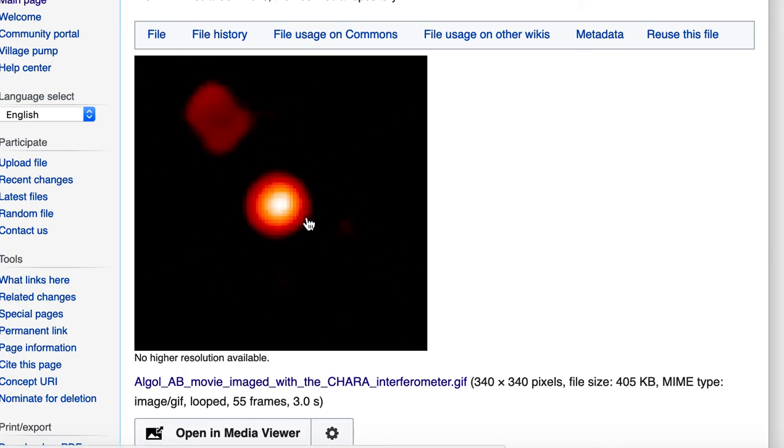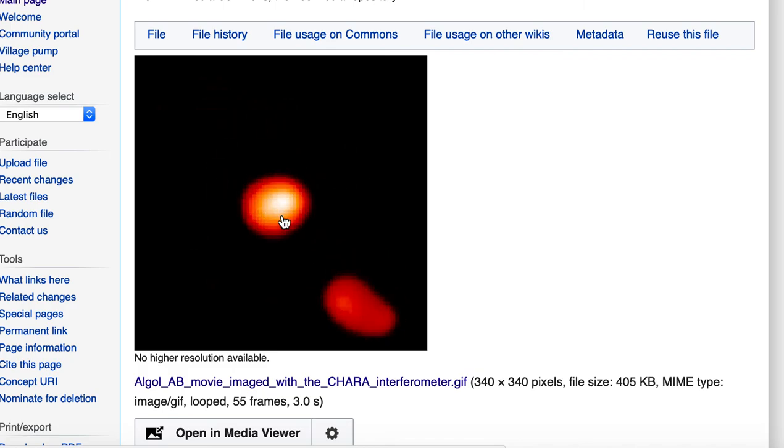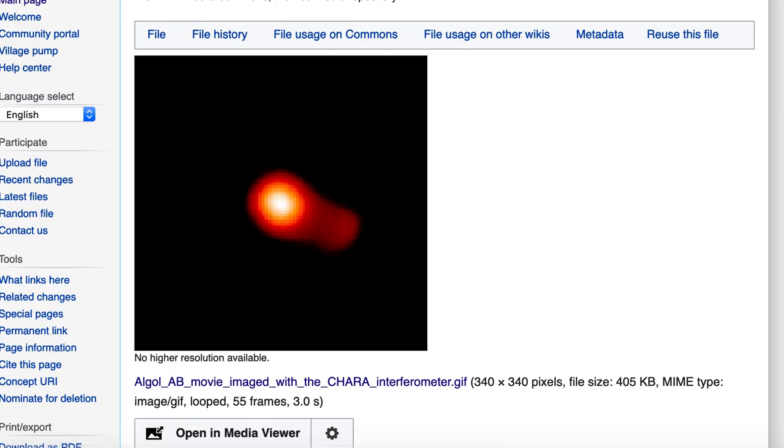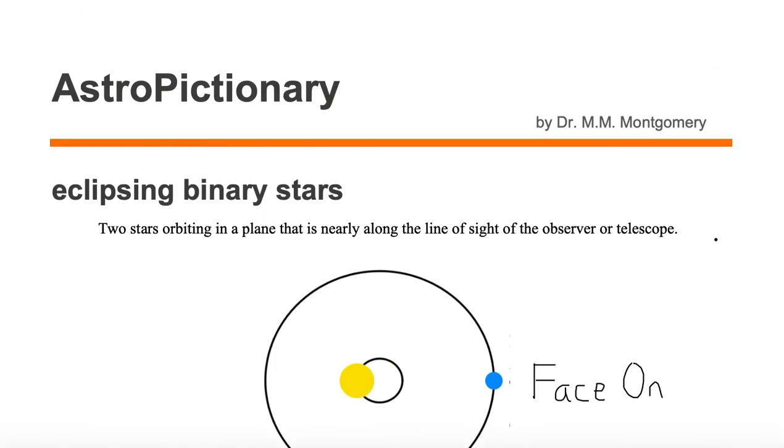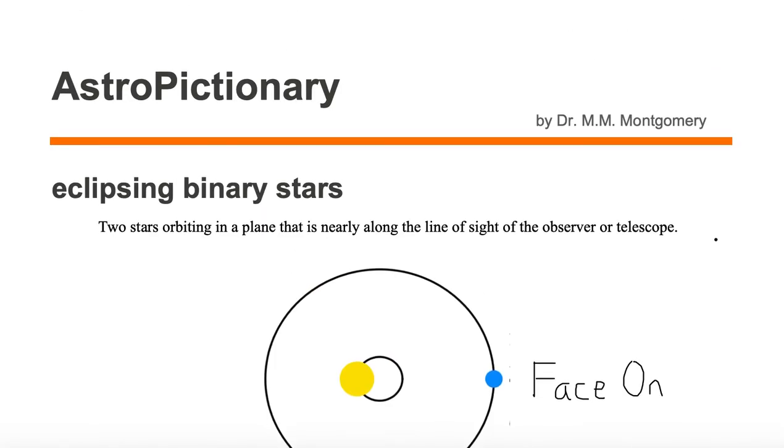However, it's still in a plane along the line of sight, along your line of sight. This is what we mean by eclipsing binary stars.